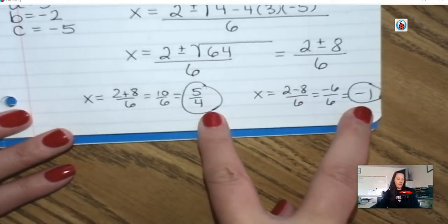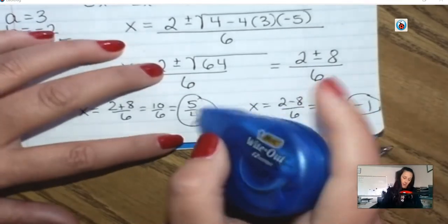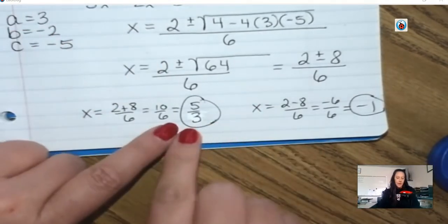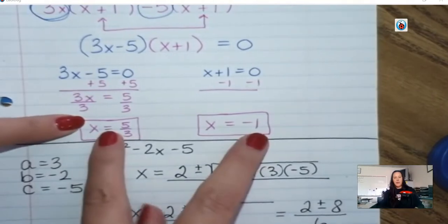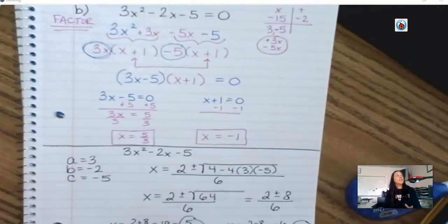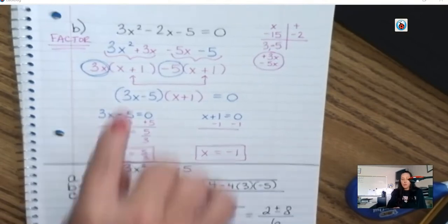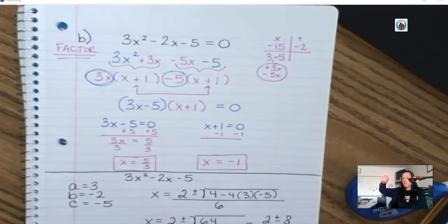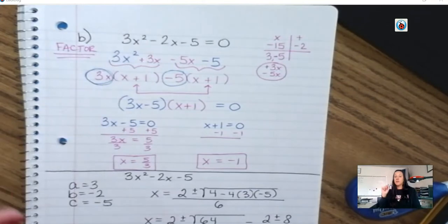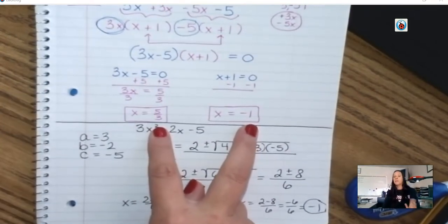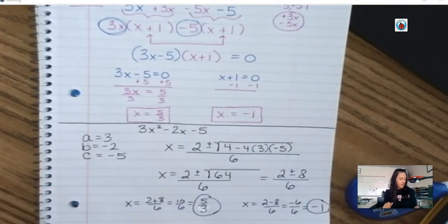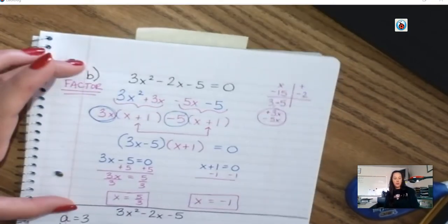So you should have ended up with 5 over 3 and negative 1 — which is what we got with factoring too. Again, I don't care which one you use to solve it. On a test I probably would put it in Desmos, type this in and look at where the graph hits — it's a parabola because it has an x squared. It should hit at 5 thirds and negative 1. But on your test you also have to show work, so maybe do that as a second thing just to check your answer. Questions on that one?